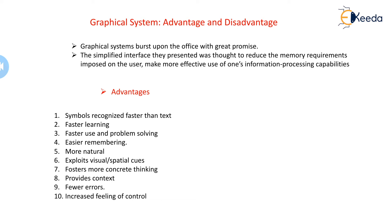Now let us look at the advantages and disadvantages. Symbols are recognized faster than text — that is an advantage because graphical things like images and pictures in the GUI with certain captions are easier to focus on rather than reading text material. You have faster problem-solving techniques that are more natural and exploit visual content. It helps in content building, provides context, and there are fewer errors because seeing an image stimulates the brain faster than reading text.